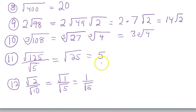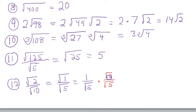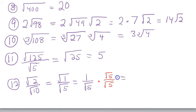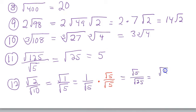Since you can't have a square root on the bottom, you rationalize by multiplying by square root of 5 over square root of 5. On top, 1 times √5 is √5. On the bottom, √5 times √5 is √25, and the square root of 25 is 5. The answer is √5 over 5.